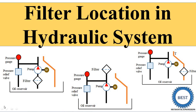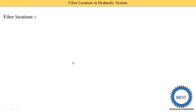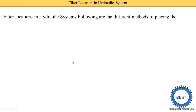In this video I discuss filter location in a hydraulic system. There are four types of locations possible for the filter: first at the suction side, second at the pressure side, third at the return side, and fourth are offline filters. Offline means the filters are not provided in the hydraulic system itself but a separate filtration process is provided. In offline filtration, four different cases are possible.